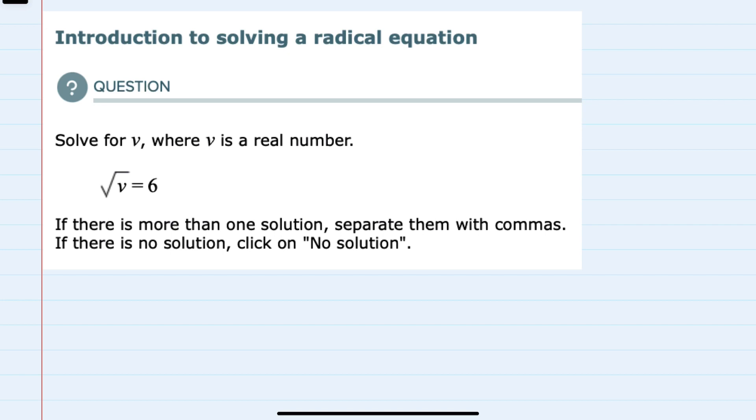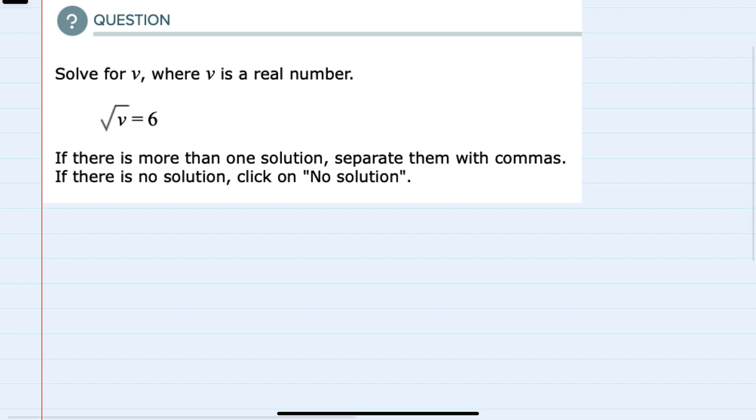Here, our radical equation is the square root of v equals 6, and v is a real number.